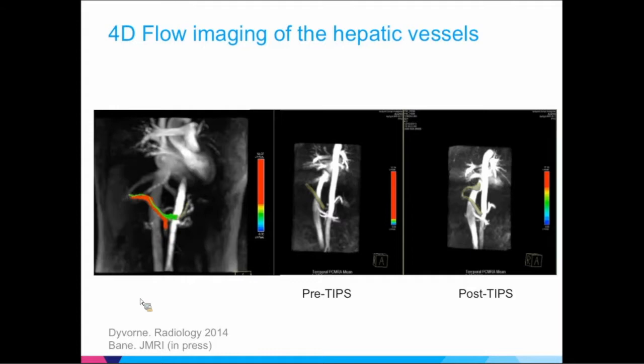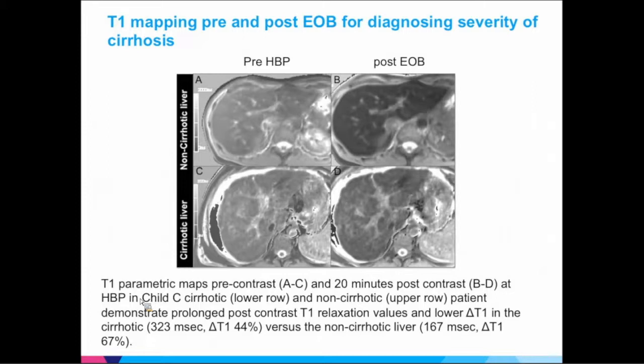We're also interested in T1 mapping. T1 is an inherent biological property of tissues measurable with MRI with relatively good precision in about one breath hold — 10 seconds. We've shown that measuring T1 before and after gadolinium-based EOS injection, you can predict the severity of liver disease. This is an example of a cirrhotic liver — you can see differences in T1 values: darker on the non-cirrhotic case compared to the cirrhotic one.